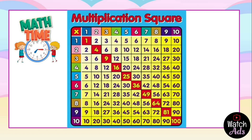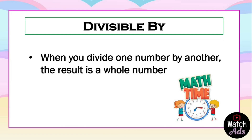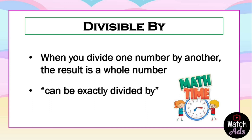The rules of divisibility. What do we mean by divisible by? When you divide one number by another, the result is a whole number — which means it can be exactly divided by.